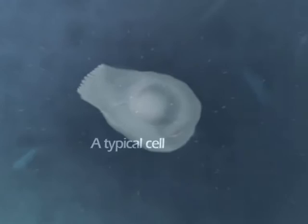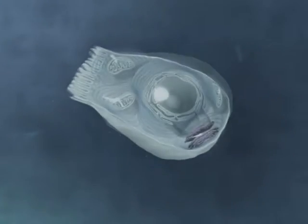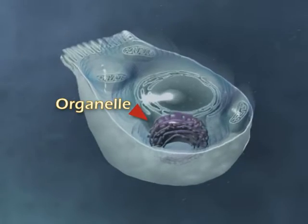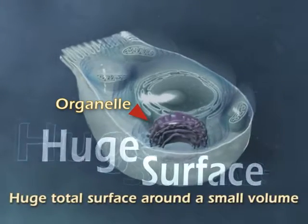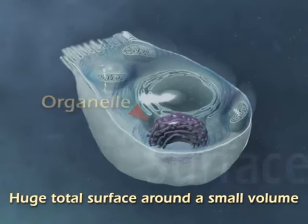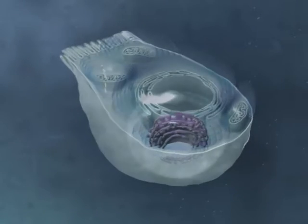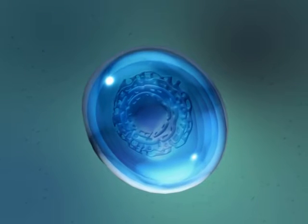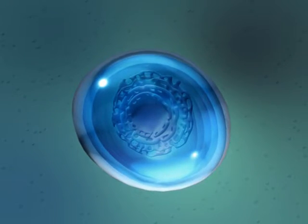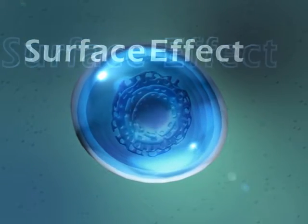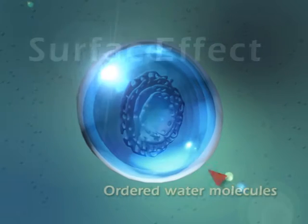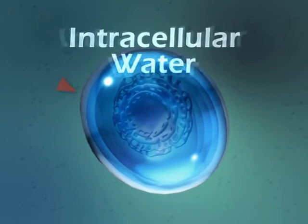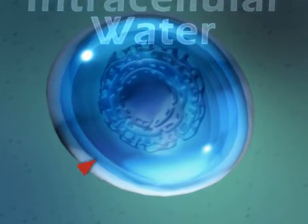Let's take a close-up view of a typical cell. If we zoom in further into the organelles inside, we see that each organelle has a huge total surface relative to its volume. This is a key property of the organelle and of the cell itself. The huge surface creates an effect known as the surface effect, and in turn organizes the water molecules surrounding the organelles. The result? Intracellular water with its unique life-giving properties.